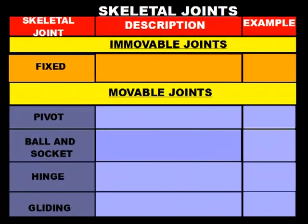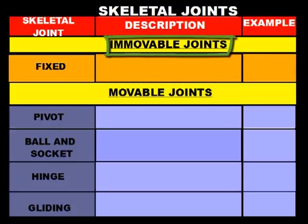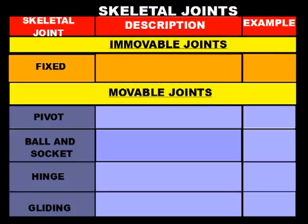Here's our chart for our notes on joints, broken up into two sections: immovable joints and movable joints. Skeletal joints are areas where two bones meet, such as your knee or your elbow, and many other places inside of the body.